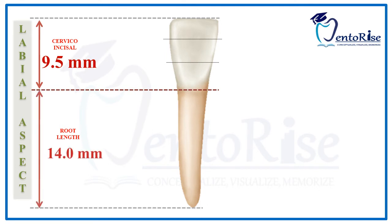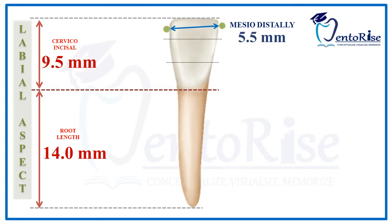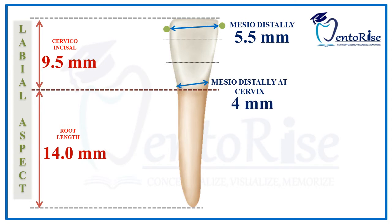Talking about the mesiodistal dimensions: the mesiodistal dimension as measured from the contact areas is 5.5 mm, while the mesiodistal dimension as measured from the cervix is 4 mm. If you observe closely, you would find that these dimensions of a permanent mandibular lateral incisor are greater in comparison to the dimensions of the mandibular central incisor.